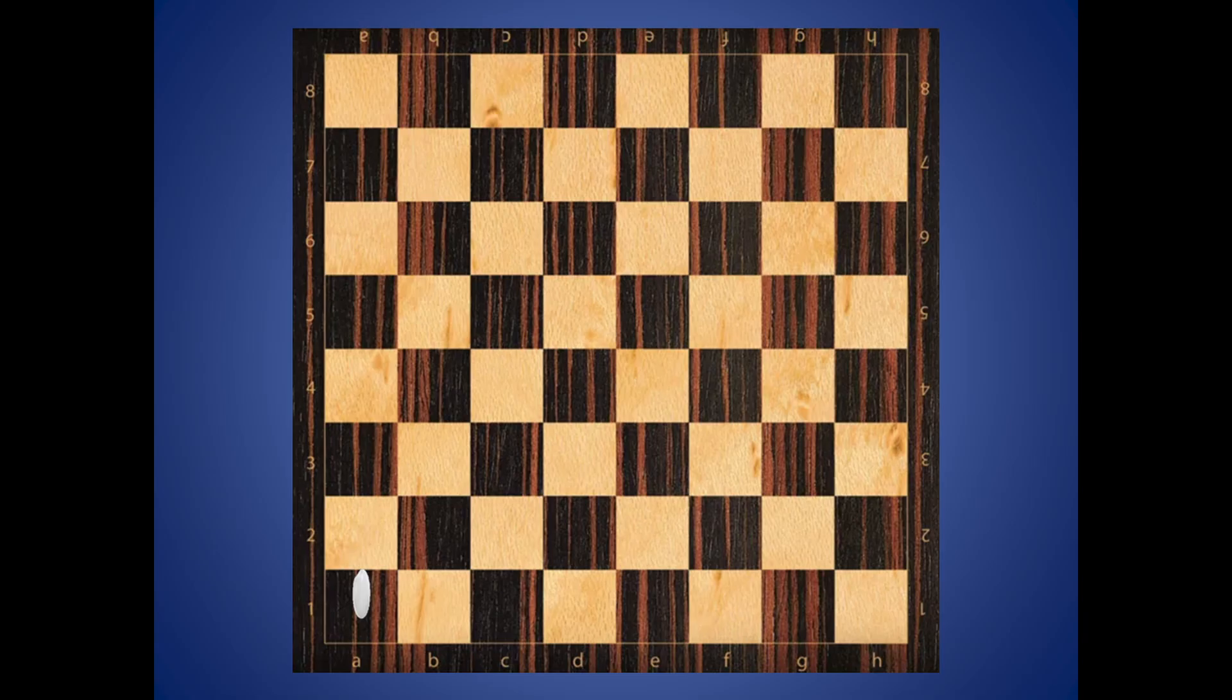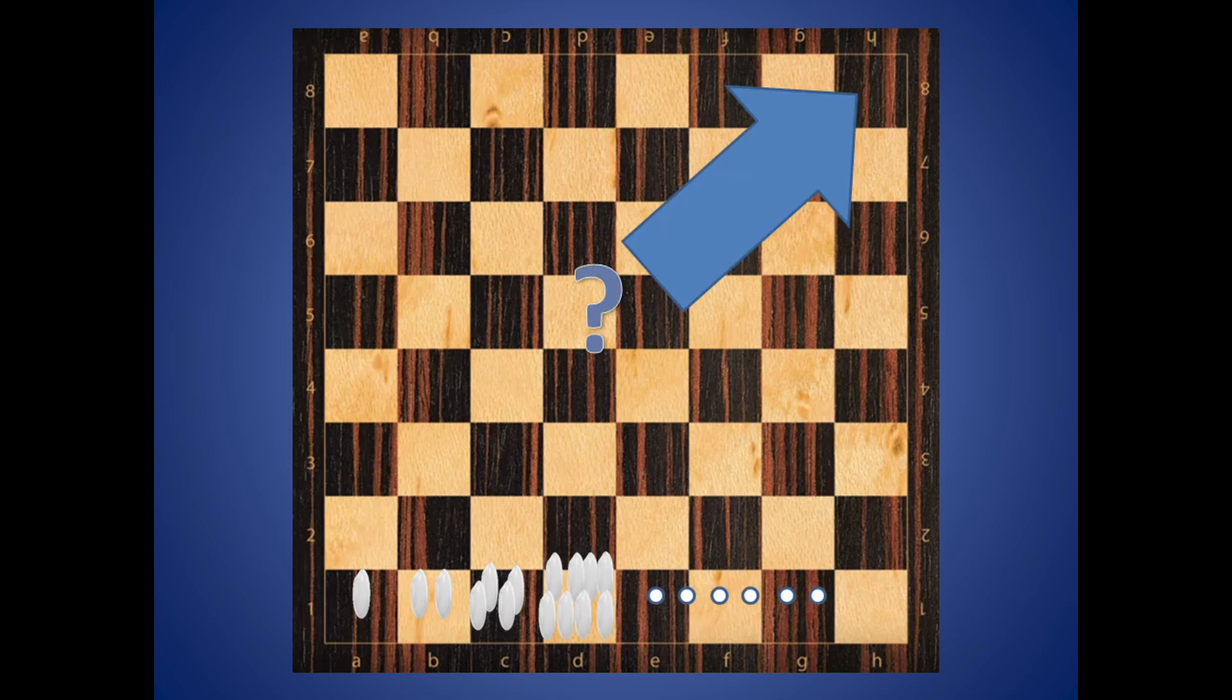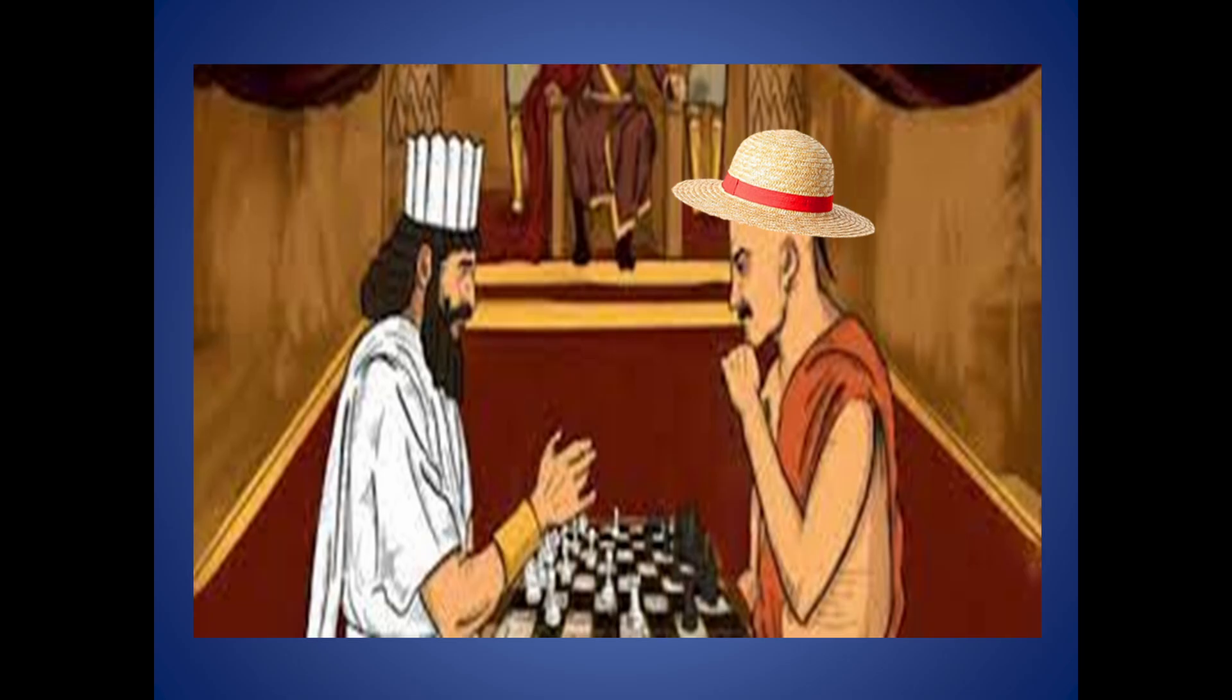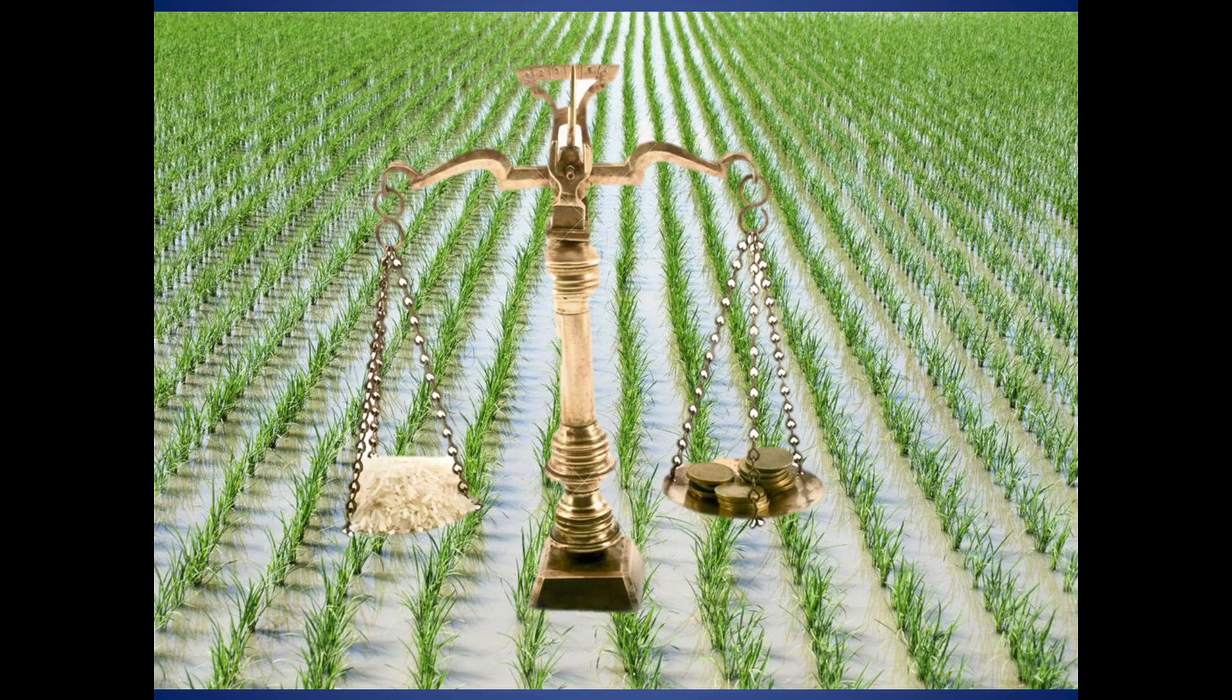He wanted a grain of rice for the first square of the chessboard, two for the second, four for the third, and so on, until the 64th square. The emperor was amazed that the man asked for such a small reward, but as his mathematician started counting he ended up losing one of his provinces.